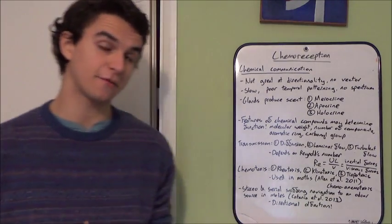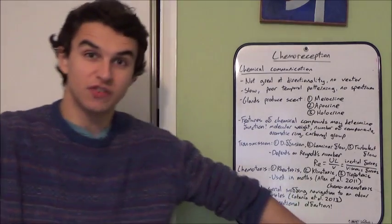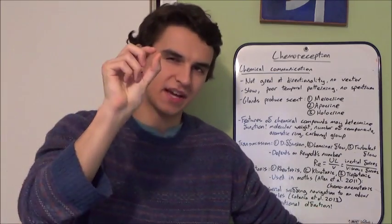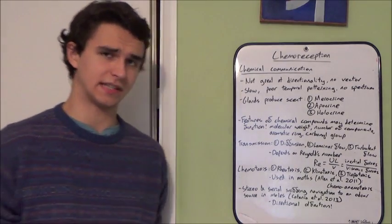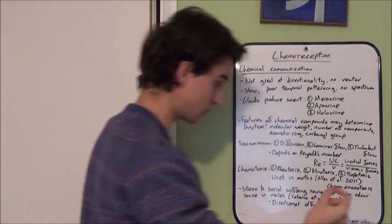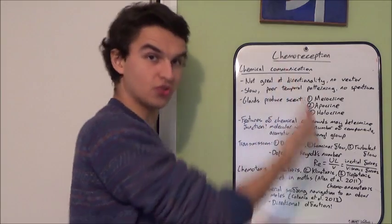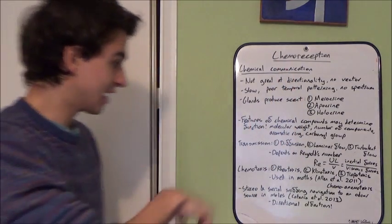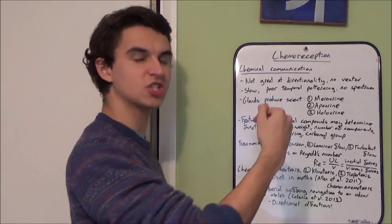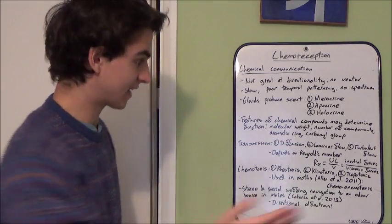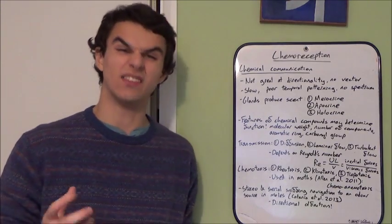Chemotaxis is used in moths to detect pheromones emitted by females. At rest, males move their wings to increase airflow over their antennae to pick up molecules. As studied by Alan et al. in 2011, when in a pheromone plume they zigzag upstream — called chemo-anemotaxis. Once they leave the plume, they fly perpendicular to it to increase the chance of re-entering it, then carry on zigzagging until they reach the source — a female to mate with.